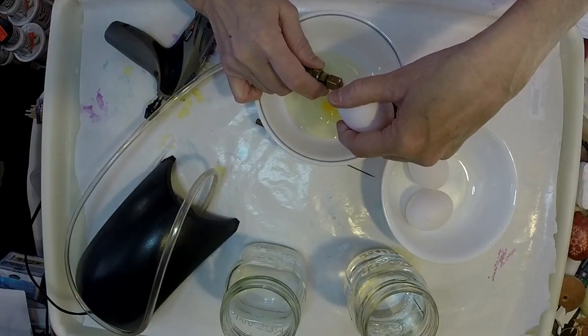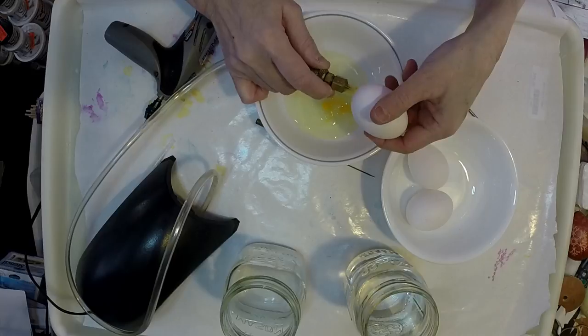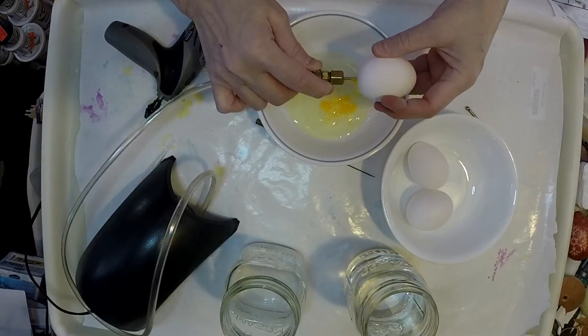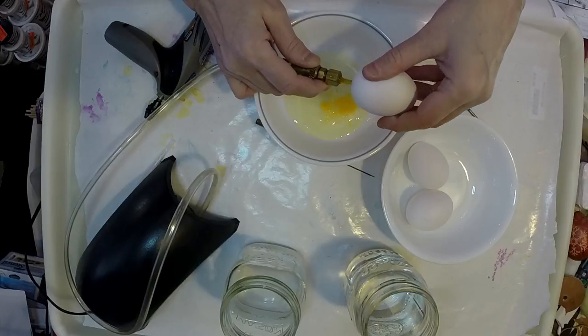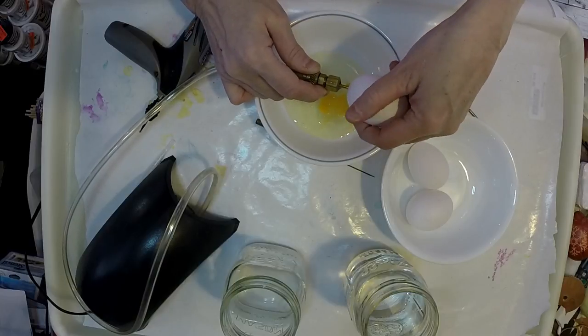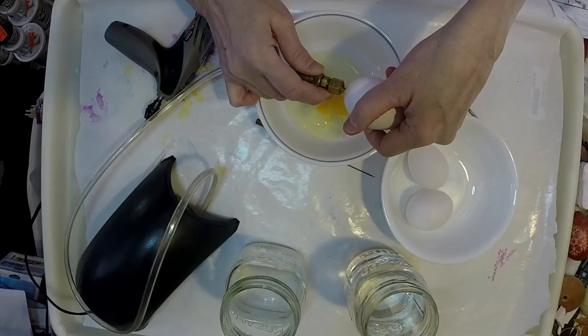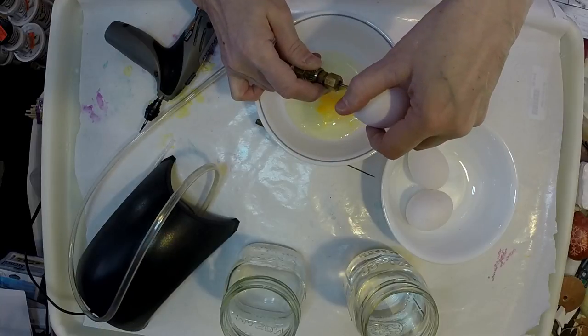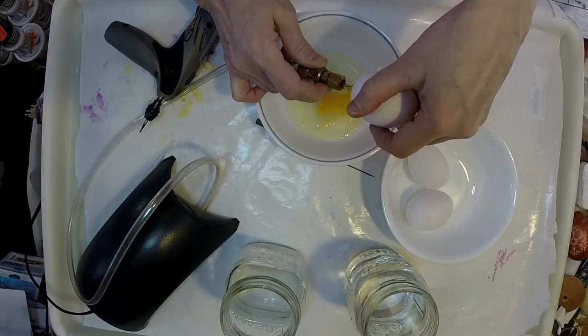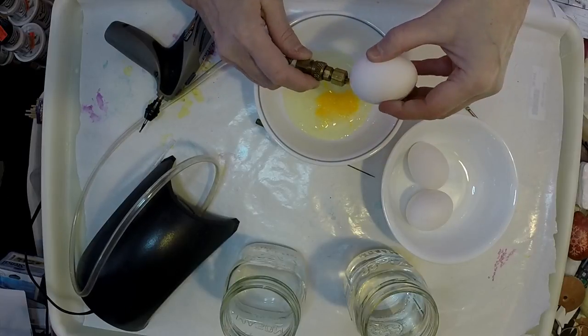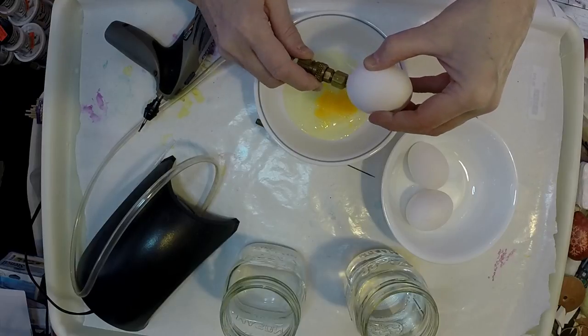The yolk part is the hardest part to come out because it's the densest liquid. And then sometimes you'll get that white skin that's inside of the egg that will come out as well. You're just going to keep maneuvering it around until you feel that it's all out. It takes a little bit of work.